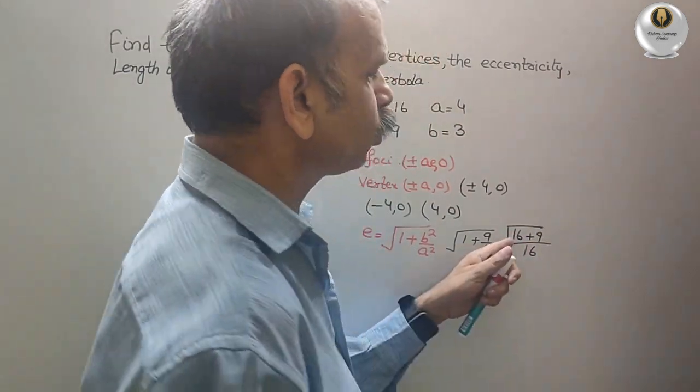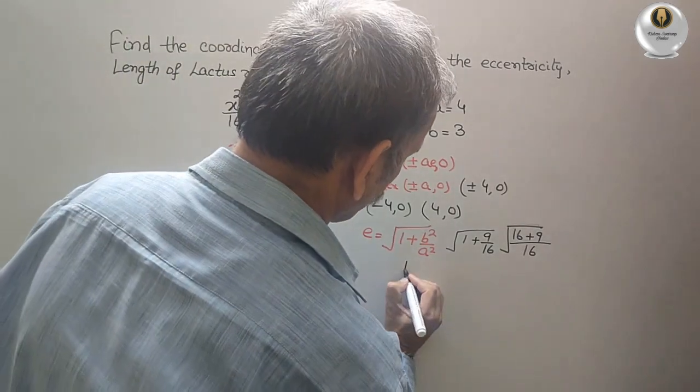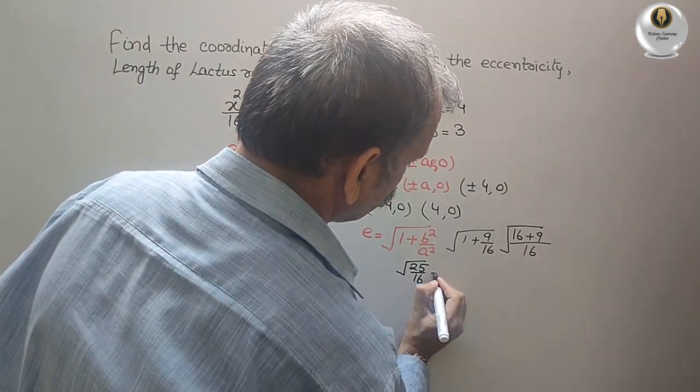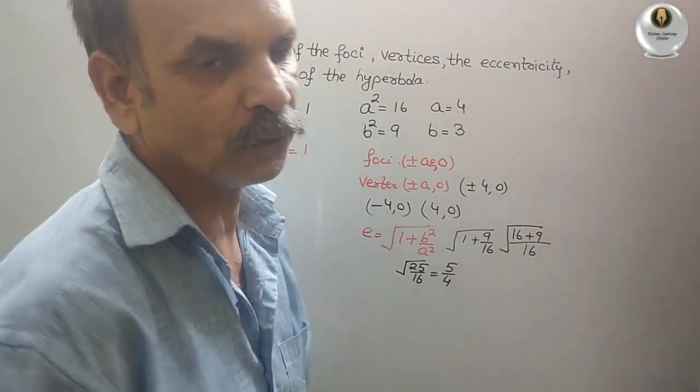Therefore, you will get root 25 by 16. This is equal to, we can say, is 5 by 4. So eccentricity is 5 by 4.